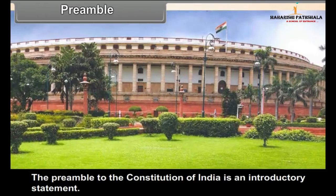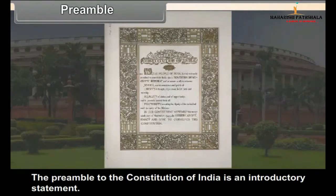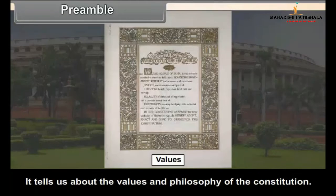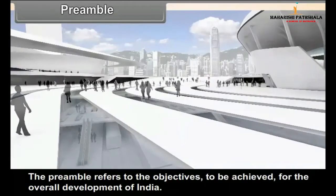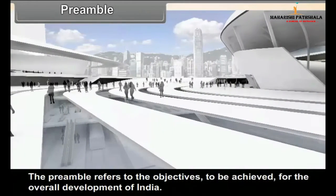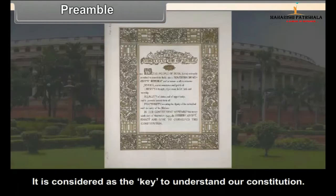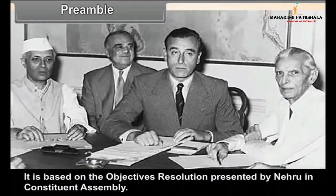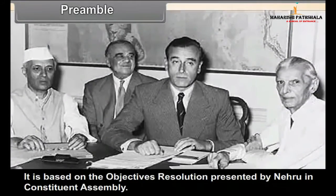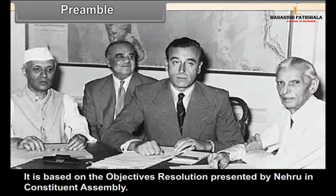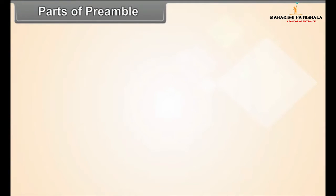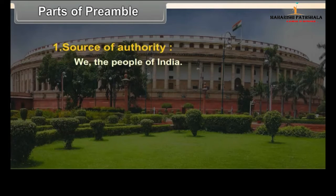Preamble: The preamble to the Constitution of India is an introductory statement. It tells us about the values and philosophy of the constitution. The preamble refers to the objectives to be achieved for the overall development of India. It is considered the key to understanding our constitution. It is based on the Objectives Resolution presented by Nehru in the Constituent Assembly. The first part of the preamble is the source of authority: 'We, the people of India.'